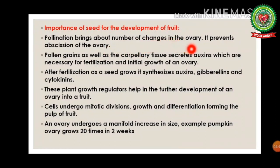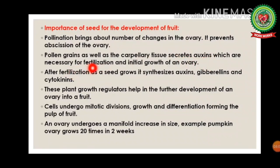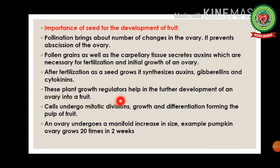Regarding the importance of seed for fruit development: pollination brings about a number of changes in the ovary. It prevents abscission — meaning the breaking away — of the ovary. Pollen grains as well as the carpellary tissue secrete auxin, a plant growth regulator necessary for fertilization and initial growth of the ovary.